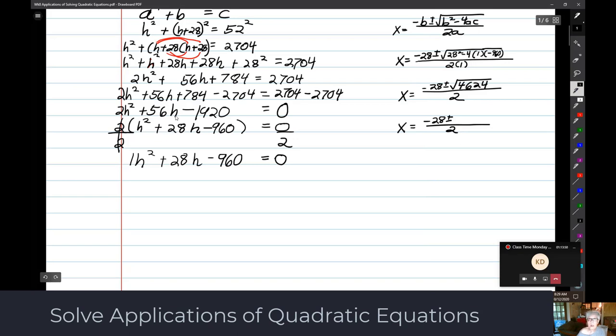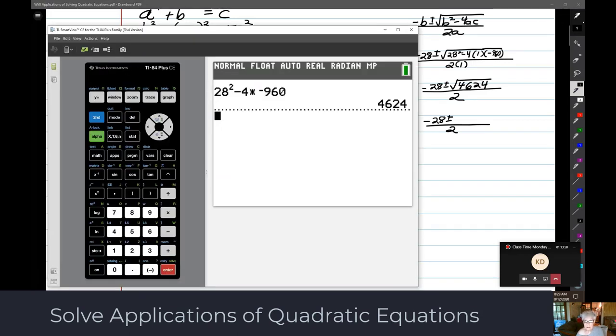We're going to find out the something under the square root. 28 squared minus 4 times negative 960. That'll be 4624. Now I'm going to take the square root of 4624 and see if it's a perfect square. It is 68.